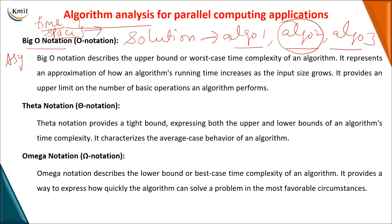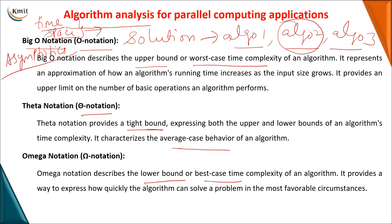These are represented by means of asymptotic notations, which have been covered in design and analysis of algorithms — here I'll give an overview. Big O notation represents the upper bound or worst case time complexity. Theta notation represents the average case behavior or tight bound. Omega notation represents the lower bound or best case time complexity. Depending on the time and space complexity, you select the algorithm with the best case time complexity.